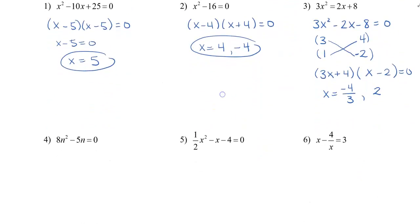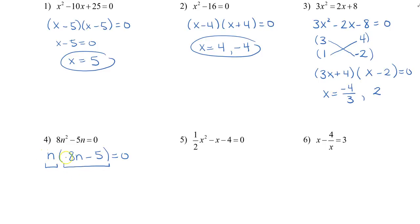Let's look at a couple more to feel more comfortable with factoring. Number 4 only has two terms — we might think it's a difference of squares, but 8n² and 5n are not perfect squares. However, both terms have an n, so we factor out the greatest common factor, which is n, leaving us with n times (8n minus 5) equals zero. Every variable we see should give us a solution, so n equals 0, and from the second factor, n equals 5 over 8.